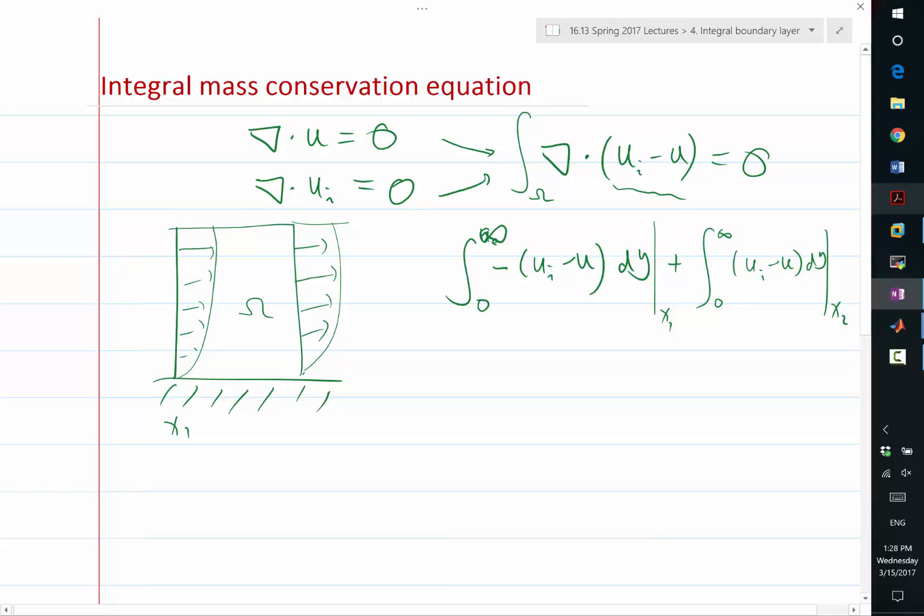And we also have the outward flux towards the bottom. And the outward flux towards the bottom is an integration from x1 to x2 of minus ui minus u, right? Oh, minus vi minus v. So this is the y-directional velocity times dx at y equal to zero.